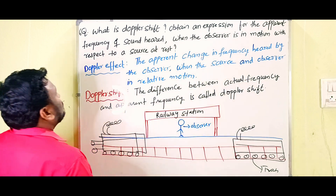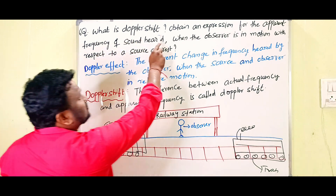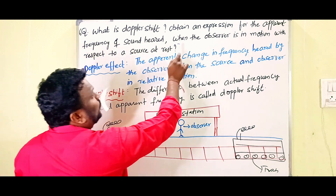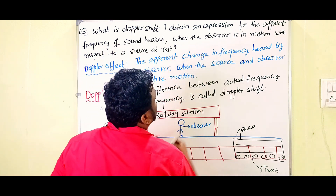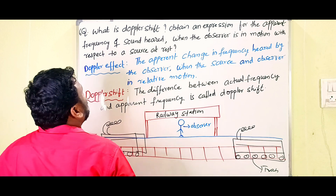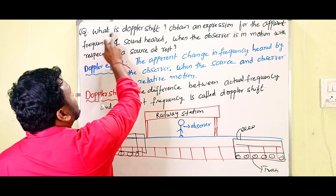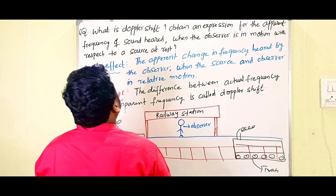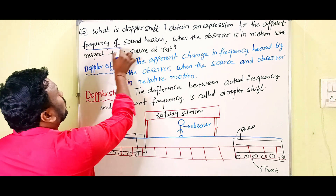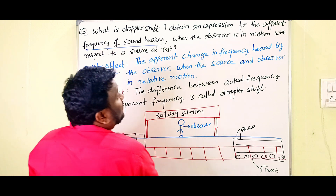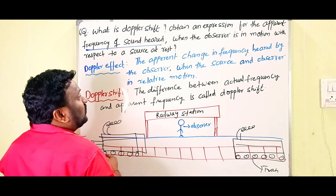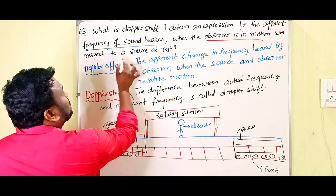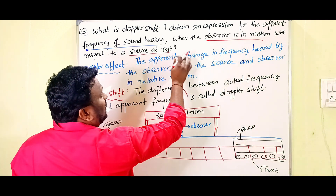So, see the question: What is Doppler shift? Obtain an expression for the apparent frequency of sound heard when the observer is in motion with respect to the source at rest. The condition is: observer is in motion and source is at rest.